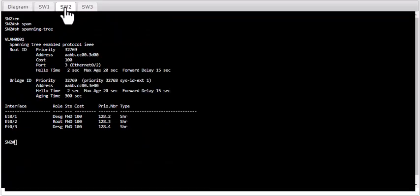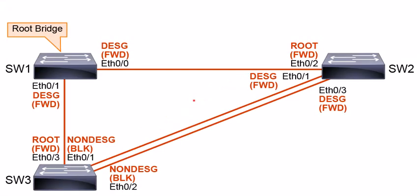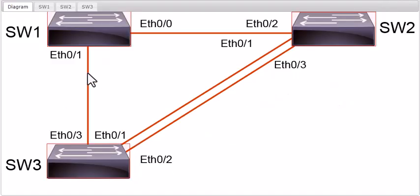Let's find out why that path is blocked. Switch 2 has a lower MAC address than Switch 3, which is why the ports on Switch 2 are in forwarding state and the ports from Switch 3 are in alternate or blocking state. At the end of convergence: SW1 is the root bridge, SW2 and SW3 each have a root port, all Switch 1 ports are designated, Switch 2's ports toward Switch 3 are designated, and Switch 3's two ports toward Switch 2 are blocked non-designated ports.